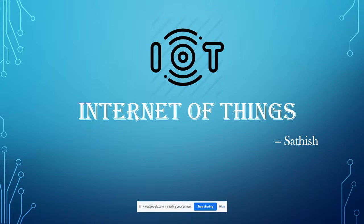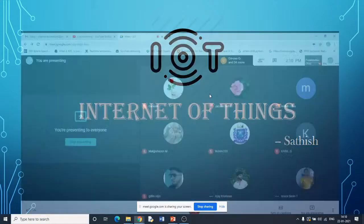IoT is one of the concepts of embedded systems. It is mainly used to communicate, control, and monitor appliances — machine to machine communication or human to machine communication through the internet.